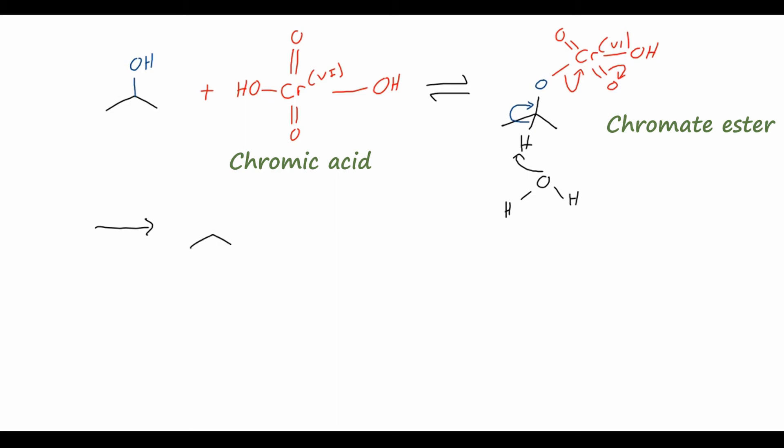So this is the main part of the mechanism. And if you'll notice, this is actually an E2-like reaction. We have our water, which is our base, and it is abstracting the adjacent proton. And then at the same time, in one concerted step, we have that bond making a double bond to oxygen. And then the leaving group, in this case, is the chromate anion. And so what we end up with is our oxidized alcohol. So now we end up with a ketone, in this case, acetone.